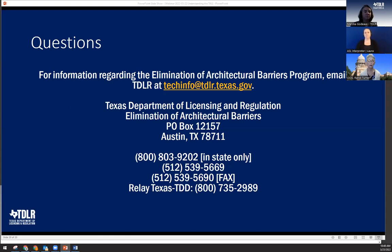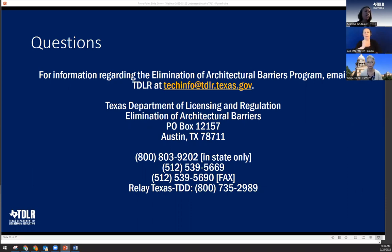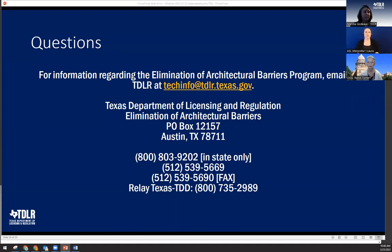How does TDLR handle a complaint on a registered project when records retention has purged the associated plans? Investigators contact the owner to determine when exactly the work was built. If it's beyond records retention and the information can't be verified, TDLR will err on the side of accessibility and require the owner to make corrections.